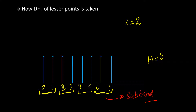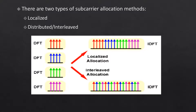Usually when implementing a system, it is specified how many subbands there are or what the subband size is. So if one parameter is given and we know the final IFFT size M, we can calculate the DFT size K. Now we will look into how the subcarrier allocation is done. There are two types: one is localized, and one is distributed or interleaved.